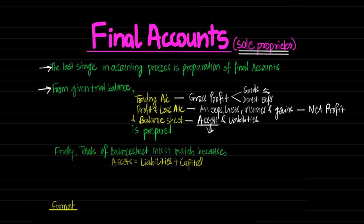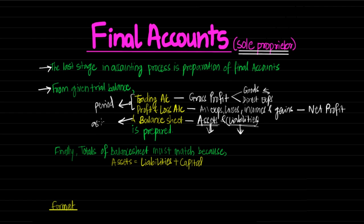Assets are those things which the company owns — the company has right to the property, which all comes into assets. Liabilities are those components because of which the company owes to somebody; it contains creditors, provisions, and capital. As per the entity concept, the Sole Proprietor invests capital into business, and capital is a liability because for the business even the Sole Proprietor is an outsider. Trading and Profit and Loss Account is prepared for a period, and Balance Sheet is prepared as on a particular date. So Balance Sheet gives us the position of the business, and Trading Account and Profit and Loss Account give us the performance.